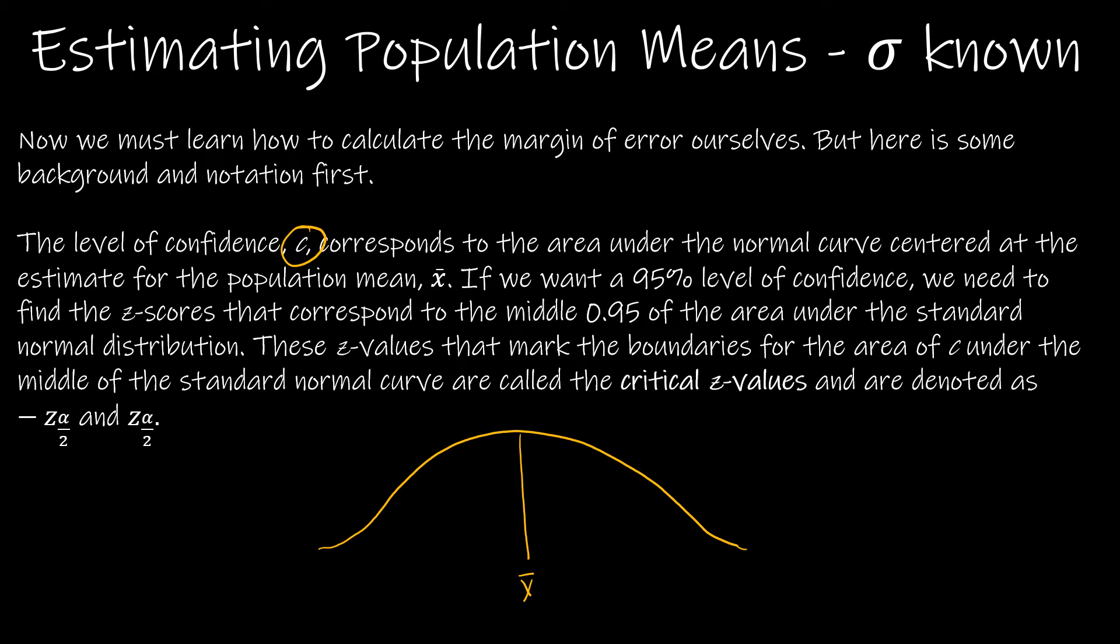Now, if I want a 95% level of confidence, essentially what I'm saying is I want from here to here, all this area in between to be 95% of the whole, or 0.95.